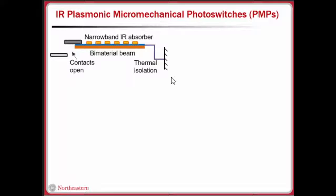Shown here is a schematic of the micro-mechanical photo switch that we have developed. It comprises a biomaterial beam that bends down in response to a temperature rise, a narrow-band plasmonic infrared absorber that absorbs electromagnetic radiation and converts it to a temperature rise, a thermal isolation region that confines the temperature rise to the biomaterial beam for higher sensitivity, and a pair of electrical contacts.